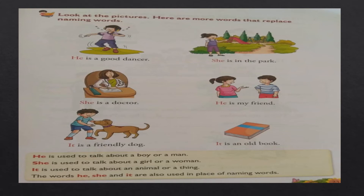The words he, she, and it are also used in place of naming words. Children, instead of repeating the naming word again and again, we use these words. When we talk about a boy or a man, we use he. If we are talking about a girl or a woman, we use she. If we are talking about an animal or a thing, we use it.